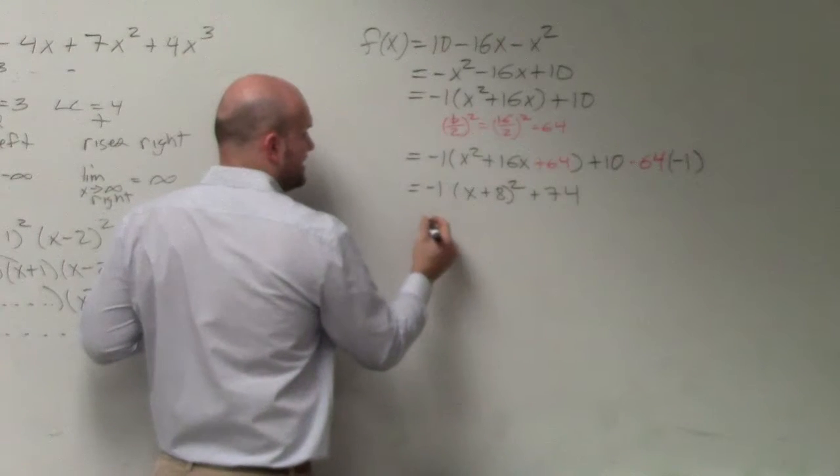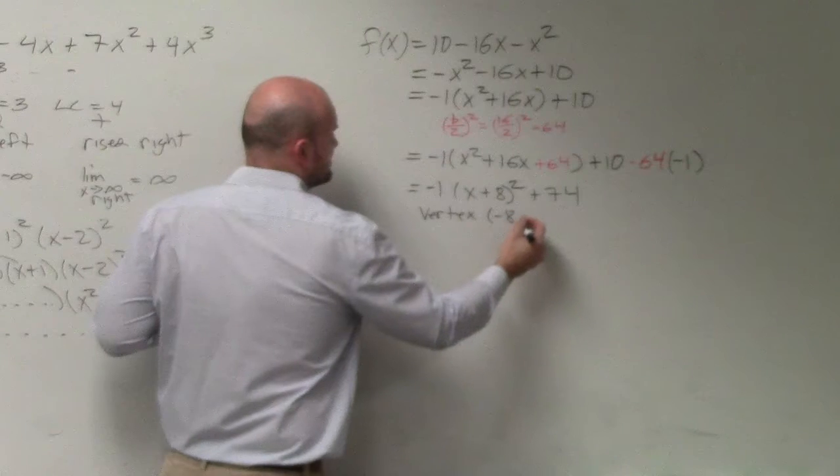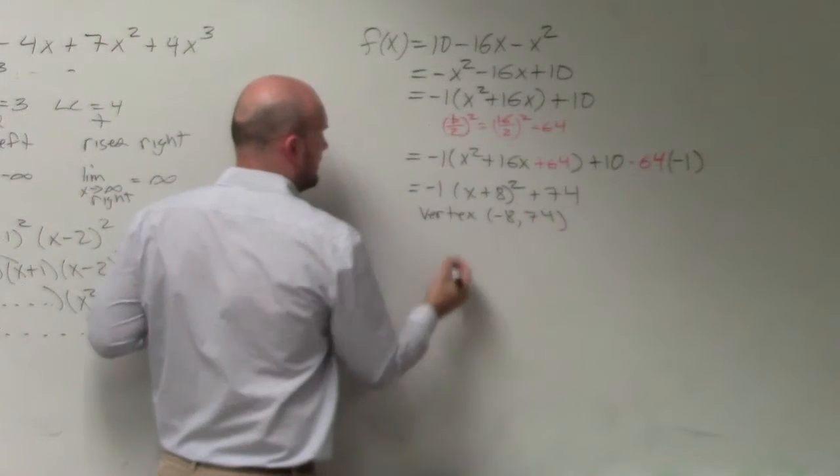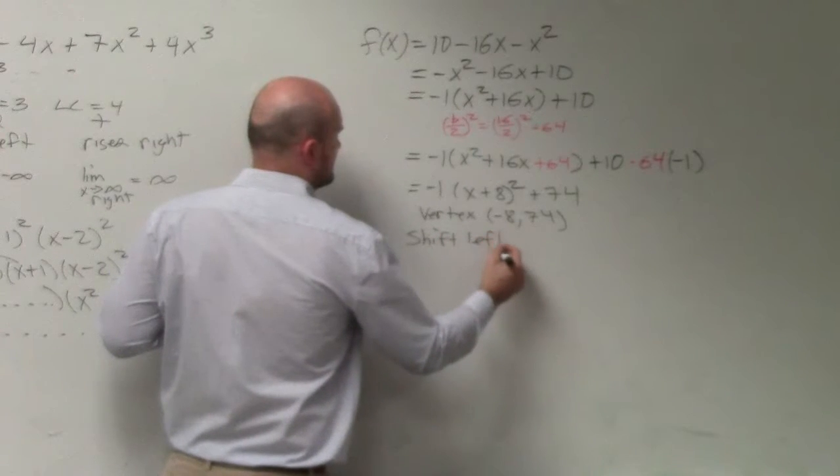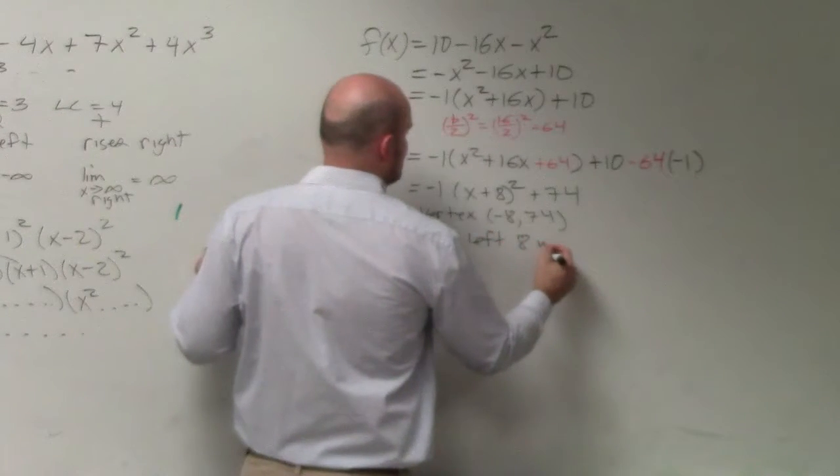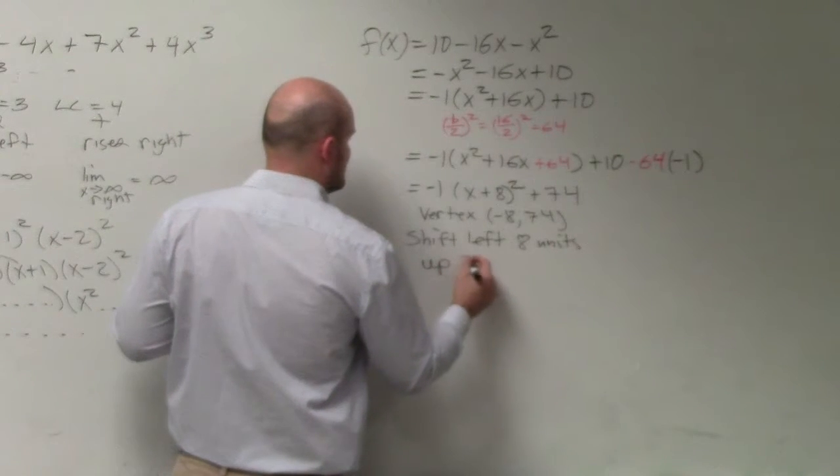So all we need to do here is say the vertex is negative 8, 74.